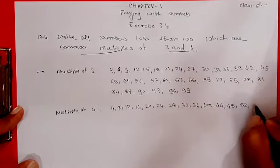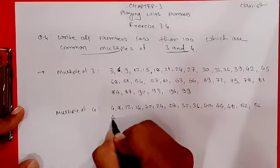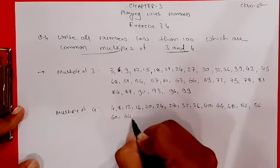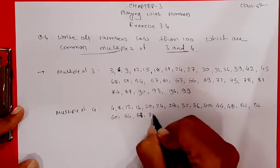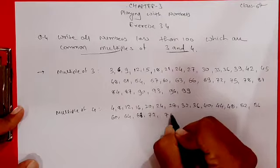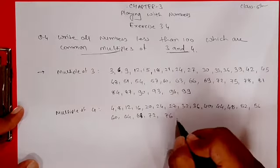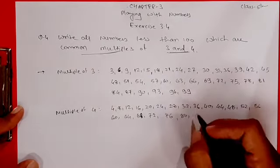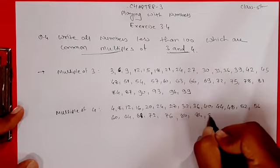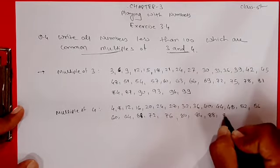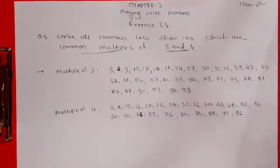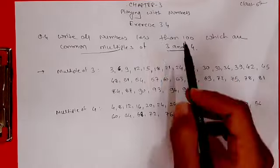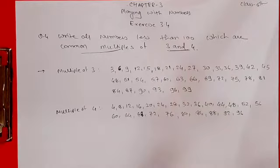Continuing multiples of 4: 52, 56, 60, 64, 68, 72, 76, 80, 84, 88, 92, 96. Next would be 100, but the question says less than 100, so we stop at 96.